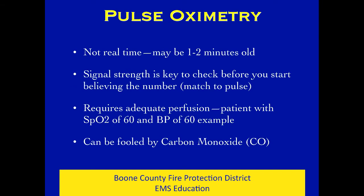Drilling down on pulse oximetry: it is not real time - your reading may be one or two minutes old. You really want to know the patient's oxygen saturation in their aorta, but we can only measure it at their finger, so it takes time for blood to transmit and you may have a stale signal. You may be seeing 88 when they're really at 90 or 82. Signal strength is really important.